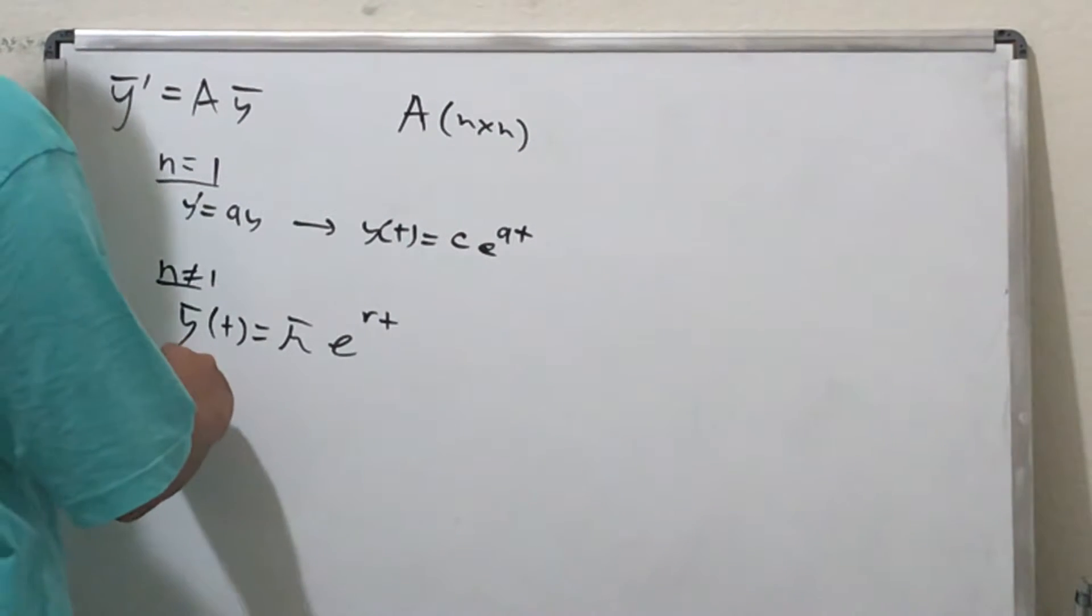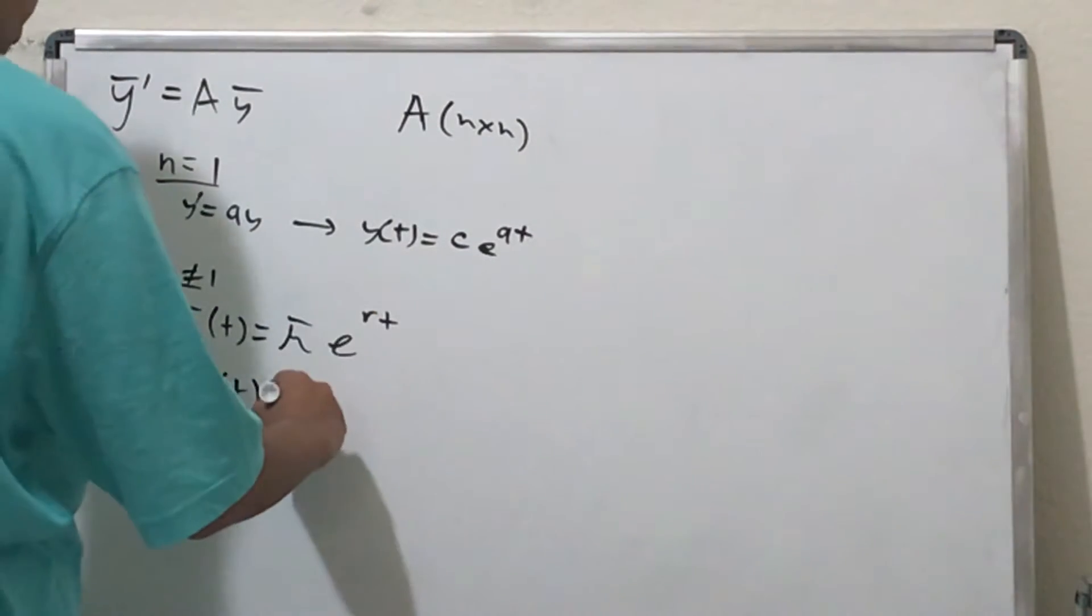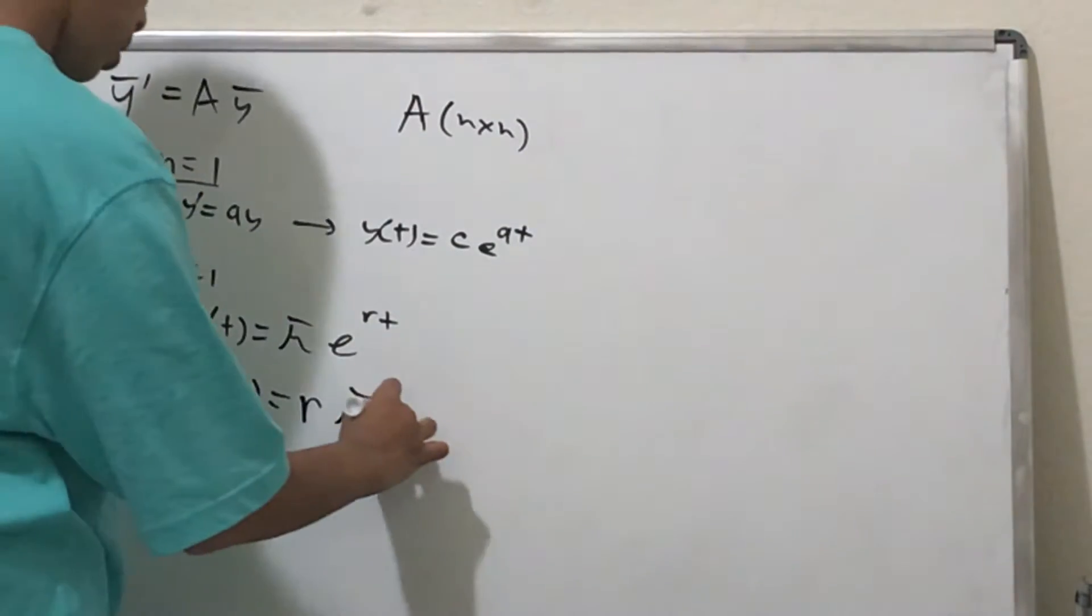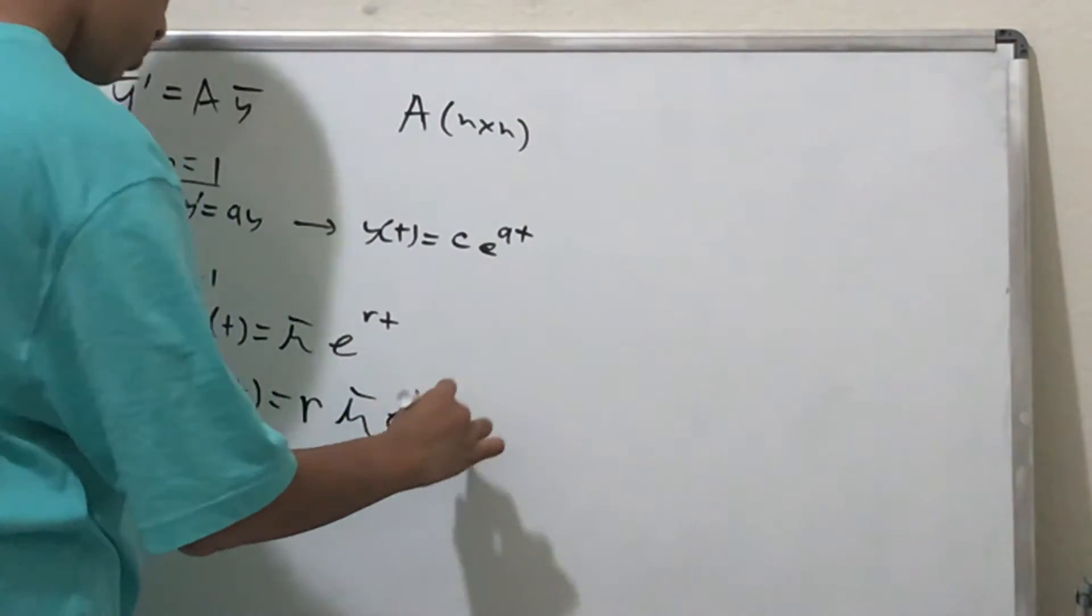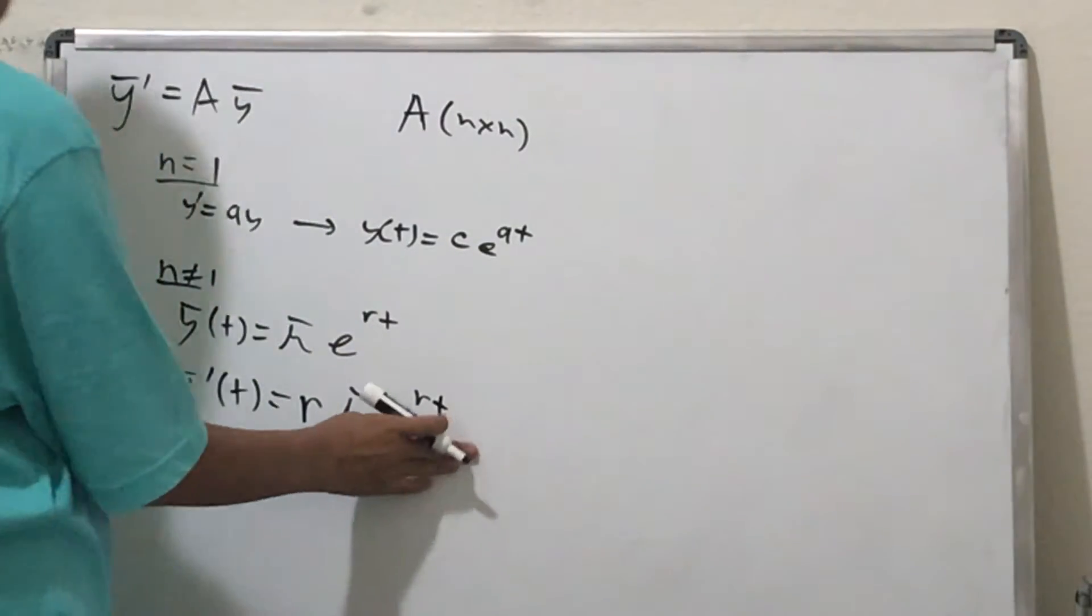Well, let's take the derivative of this. So this means that y'(t) is going to be r times μe^(rt). And now let's see if this satisfies our differential equation.